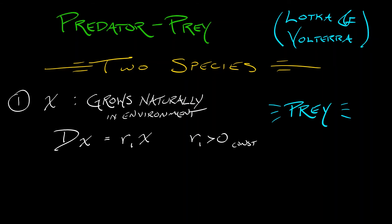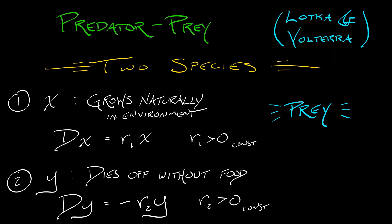The second species, y, has different natural dynamics. Y dies off without food. If I were to write down the natural dynamics of y, it would be dy = -r2·y, where r2 is a positive constant. That minus sign out in front means that y dies off. Y is the predator.